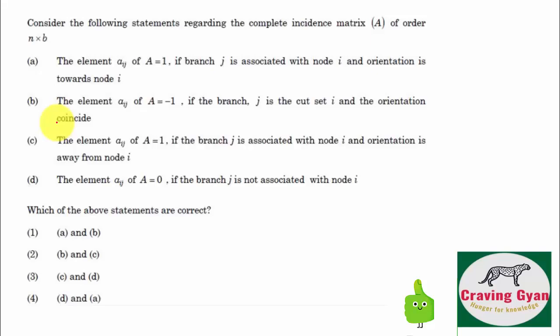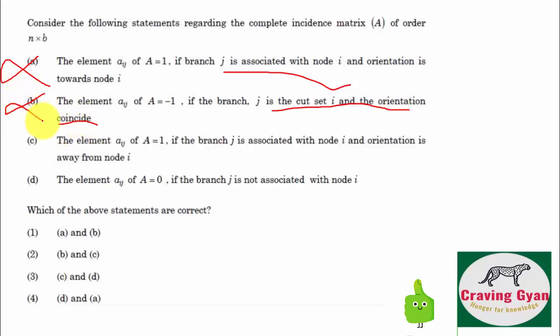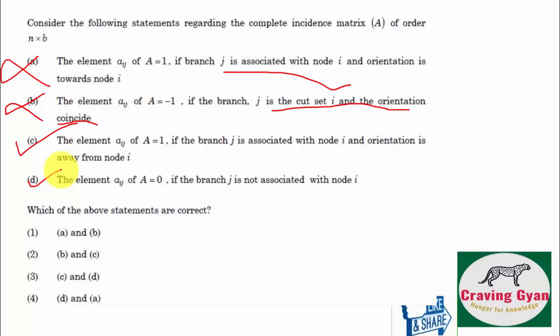Thirteenth question: consider statements regarding the complete incidence matrix of order N×B — you can relate this with signal flow graph. Statement A: element aij = 1 if branch j is associated with node i and orientation is towards node i — wrong. Statement B: aij = −1 if branch j is in cut set i and orientation coincides — also wrong. Statement C: aij = 1 if branch j is associated with node i and orientation is away from node i — if orientation is towards j, take it as positive. Statement D: aij = 1 if branch j is not associated with node i — correct. So options C and D are correct, hence option 3 is going to follow.